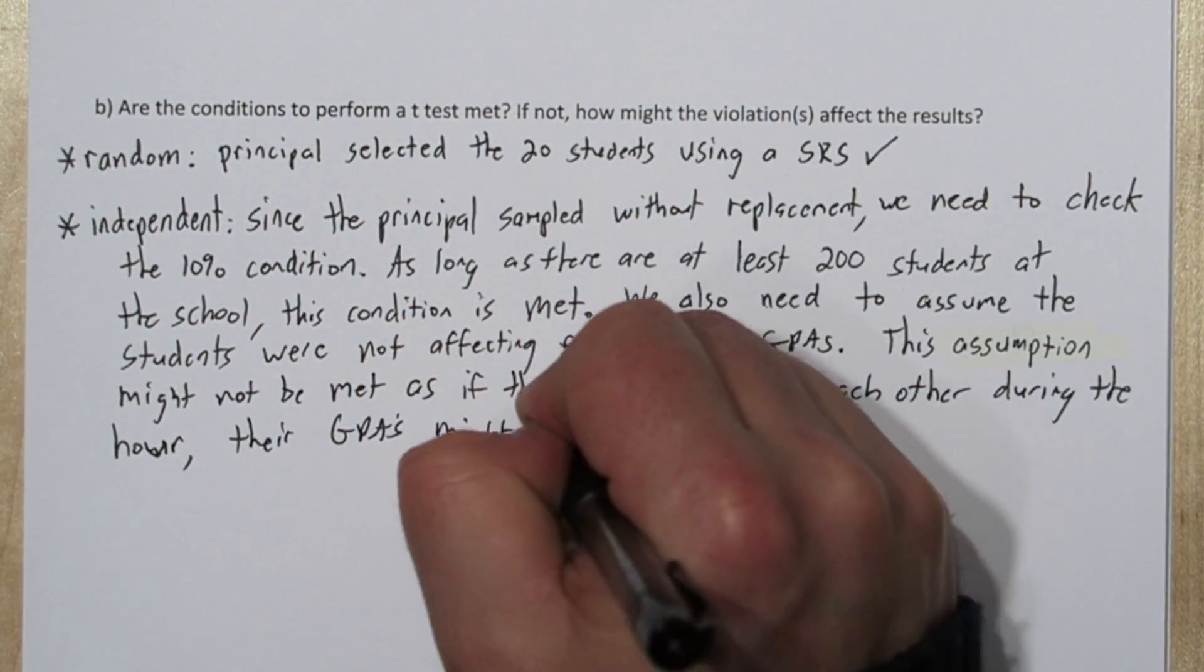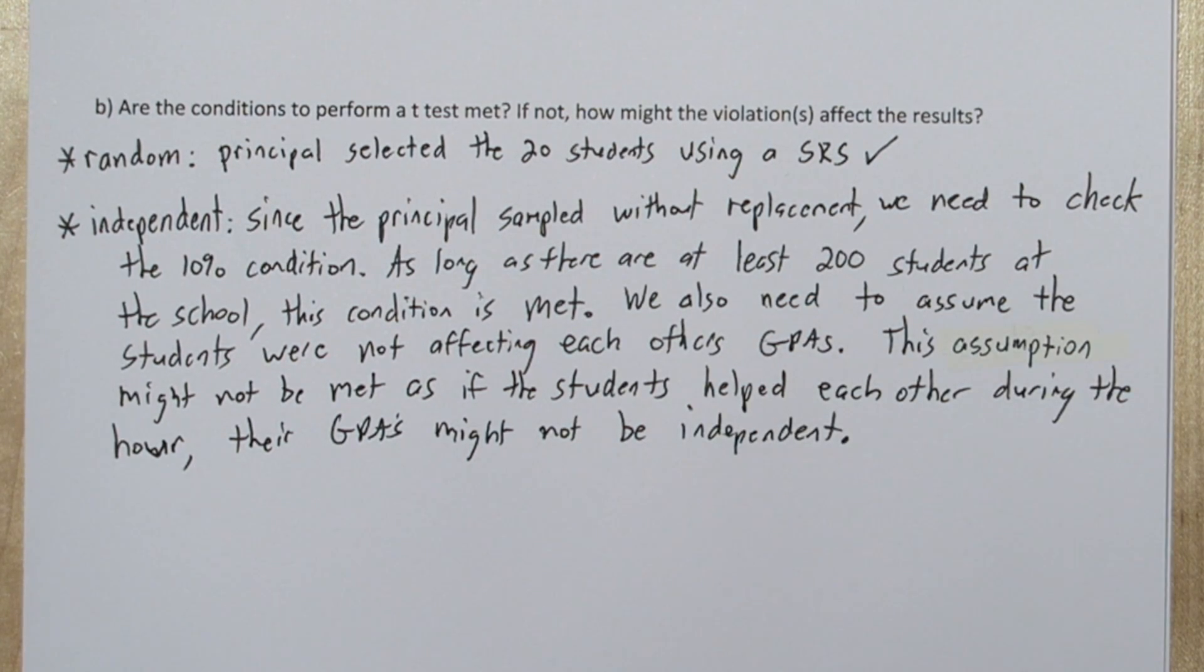So this condition would not be met. This violation could affect the results. If the student's collaboration caused an increase in GPA for the entire group, that would have nothing to do with the aquarium and cause more problems in our conclusion.